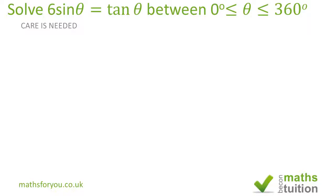If we divide every term by tanθ, we end up with 6sinθ over tanθ. We know that sinθ over cosθ is tanθ, so this reduces to 6cosθ equals one.